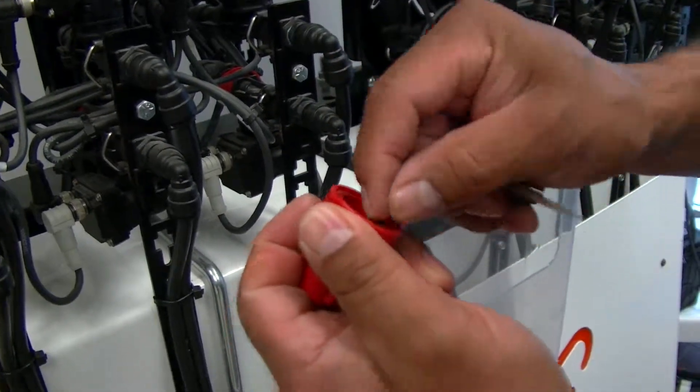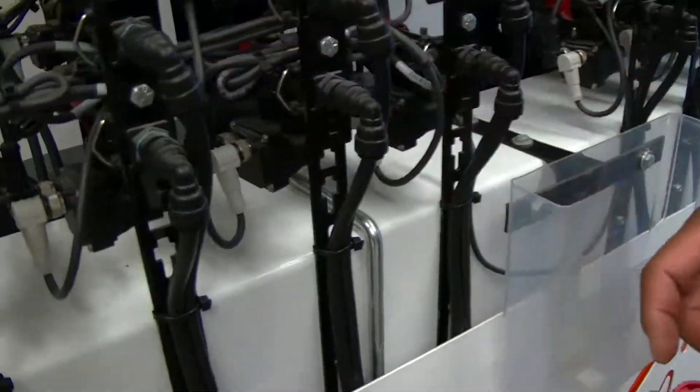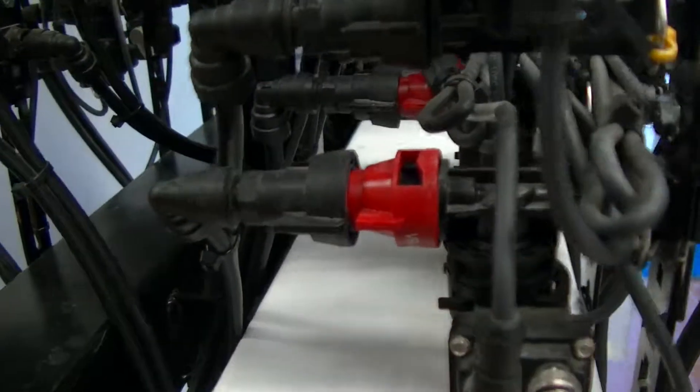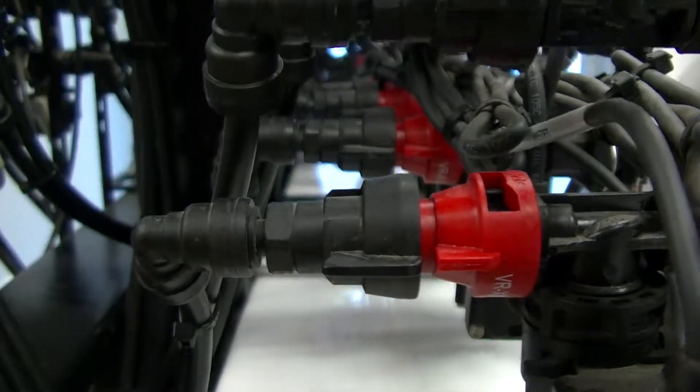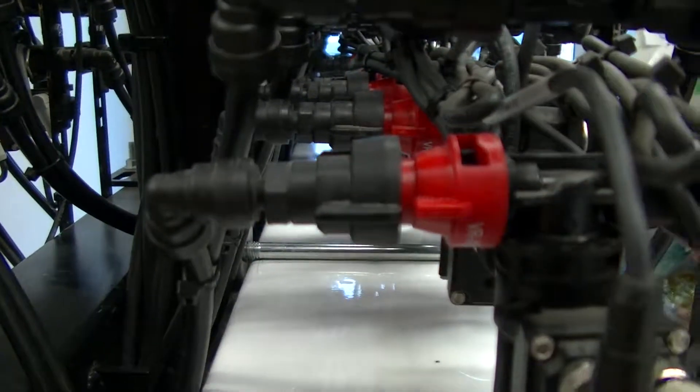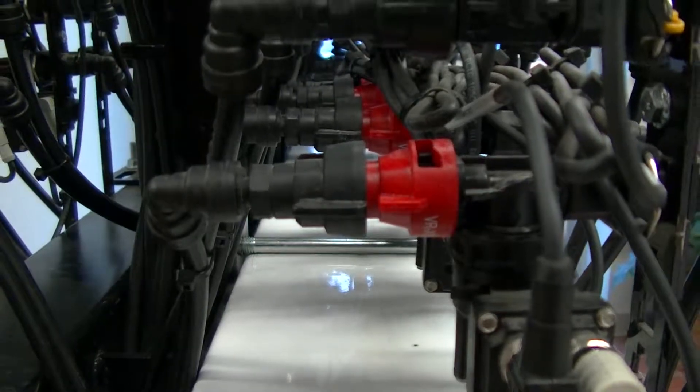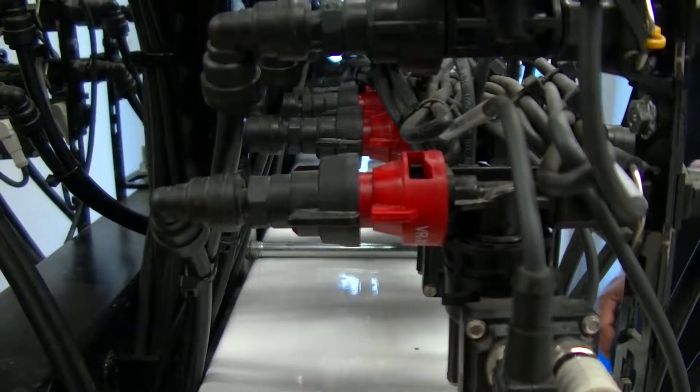We've set this system up with the variable rate orifice on every single row on our high side. This allows us to get anywhere from 0.13 to 1.01 gallons per minute.